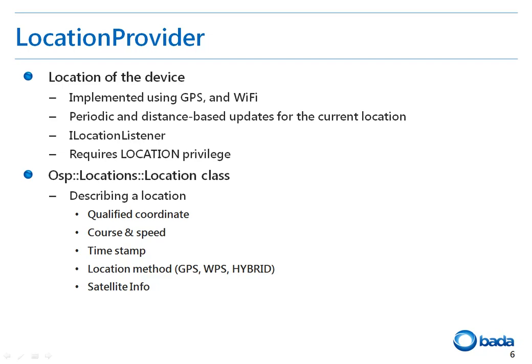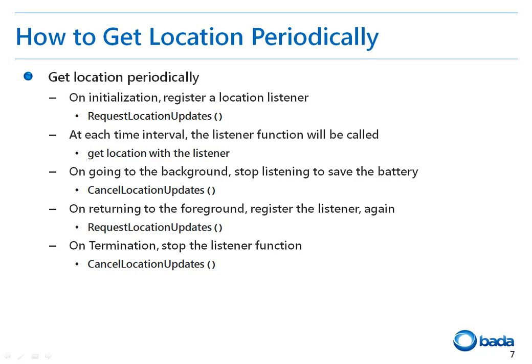Location updates are required based on a periodic or distance basis. The iLocationListener interface provides a listener that receives events associated with a particular location provider. In order to use the Location Provider APIs, we need to include the privileges of the location in the manifest file. The Location class provides location-related information such as qualified coordinates, course, speed, timestamp, a location method such as GPS, WPS, or hybrid, and the satellite info.